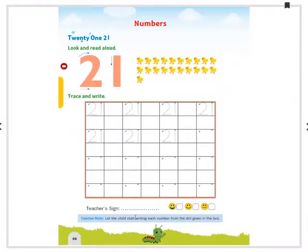Yes, here you can see trace and write 21. Read aloud children, 2, 1, 21. See how many chicks are there? One. Let's count it. Count along with me. 1, 2, 3, 4, 5, 6,